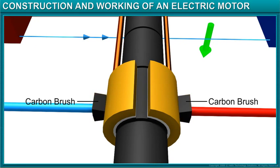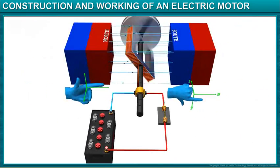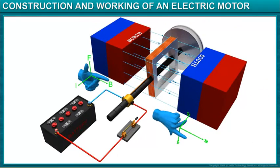Two carbon brushes fixed to the two split rings, connecting them electrically to the coil. A battery that provides electrical energy to the motor.